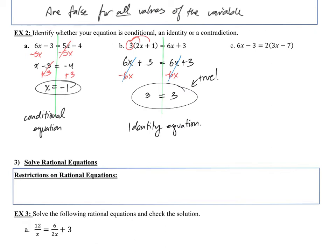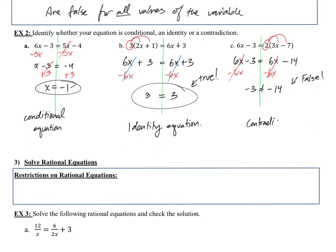For part c, distributing gives 6x minus 3 equals 6x minus 14. Subtracting 6x from both sides — the variables cancel out again. This time I'm left with negative 3 equals negative 14. That doesn't make sense — it's false. So this is a contradiction. If your variable cancels out, you have one of two options: it's either an identity where the statement is true, or a contradiction where the statement is false.